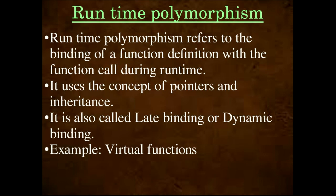Runtime polymorphism occurs at the time of runtime, when the program executes. It refers to the binding of a function definition with a function call during runtime — during execution. Runtime polymorphism uses the concept of pointers and also inheritance. It is also called late binding or dynamic binding. The example of runtime polymorphism is virtual functions.